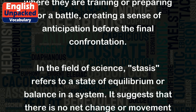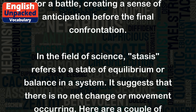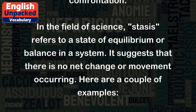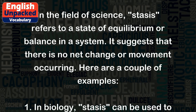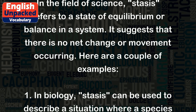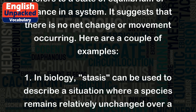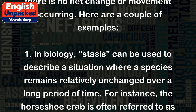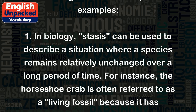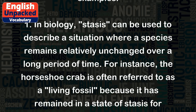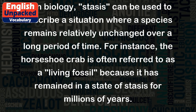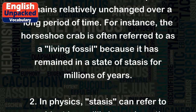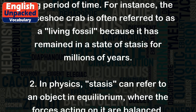In the field of science, stasis refers to a state of equilibrium or balance in a system. It suggests that there is no net change or movement occurring. In biology, stasis can be used to describe a situation where a species remains relatively unchanged over a long period of time. For instance, the horseshoe crab is often referred to as a living fossil because it has remained in a state of stasis for millions of years.